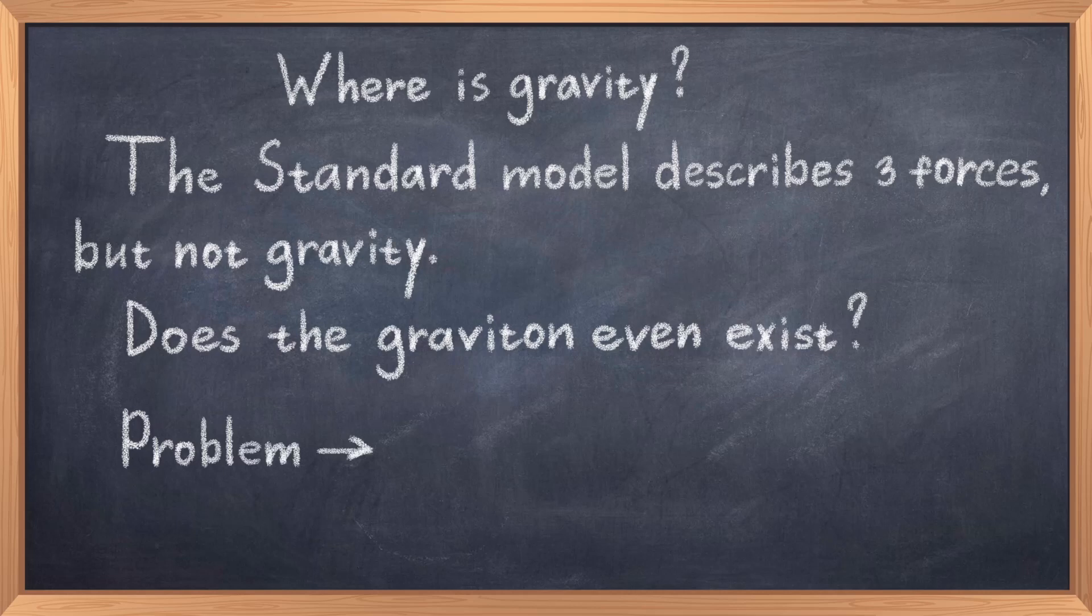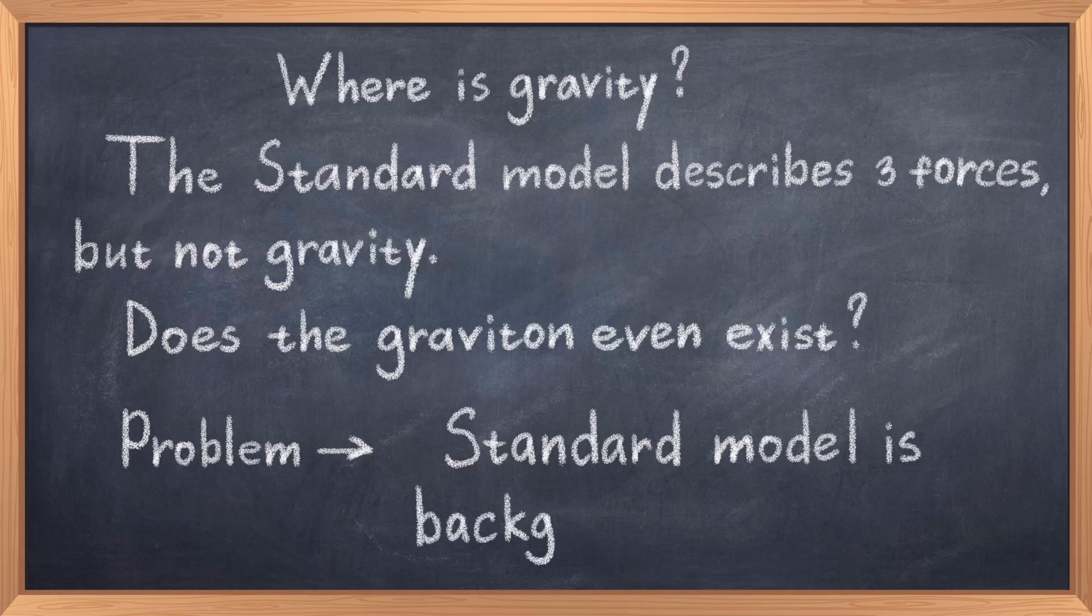This seems to be necessary because the standard model is based on a static background. Thus, the way the standard model is defined is such that spacetime is flat and cannot change while the standard model acts. This obviously makes the standard model incompatible with gravity as it requires a dynamic and curved spacetime to act. All of this boils down to the fact that the standard model is background dependent. It depends on some fixed background of spacetime. Therefore, we would need some deeper theory beyond the standard model to understand the link between gravity and the standard model.